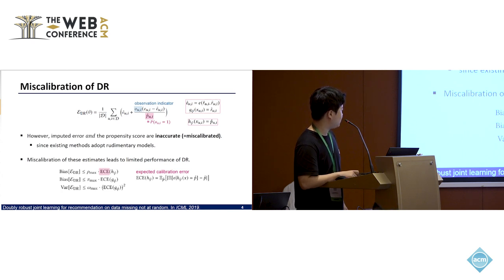So ECE is expected calibration error. Calibration means that for a binary classifier h, if it outputs 0.7, the result should be correct in the proportion of 0.7. For example, if the binary classifier is between dog and cat, if the classifier says this input should be 0.7, that's what calibration means.